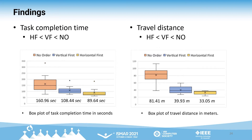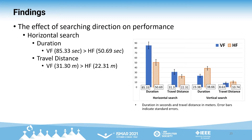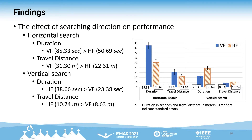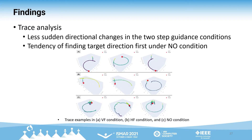It was found that the travel distance under HF condition was significantly shorter than the other two conditions. We also analyzed the duration of each step of the two-step guidance to find the effect of searching direction. Participants were faster under HF condition than VF condition in horizontal search, while they were faster under VF condition than HF condition in vertical search. When we analyzed participants' traces, it was found that participants tend to make fewer sudden changes in direction in the two-step conditions than in the one-step condition. The number of sudden directional changes was more prevalent when finding the exact target location in the NO condition. Additionally, the tendency of finding the target direction first before finding the exact position in 3D was confirmed under the NO condition.